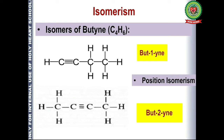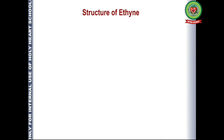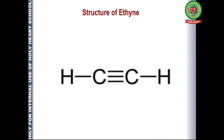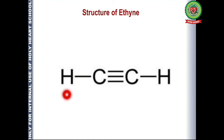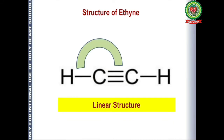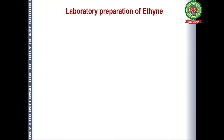The next topic is the structure of ethyne — two carbons with a triple bond between them. Since the valency of carbon is four, three valencies of each carbon are satisfied by the triple bond with the other carbon, and one valency is satisfied by hydrogen. The structure of ethyne is linear, and the bond angle is 180 degrees. We must remember that the angle is 180 degrees and it has a linear structure.